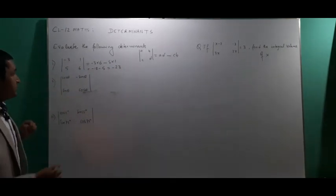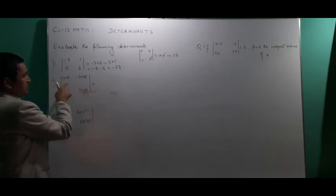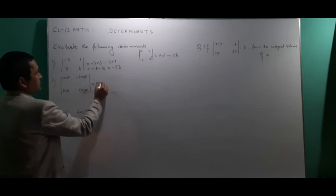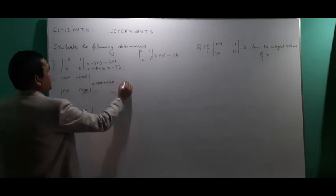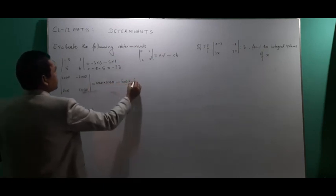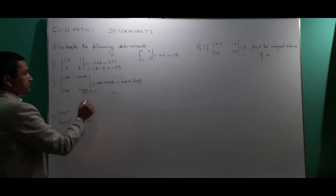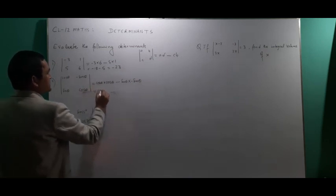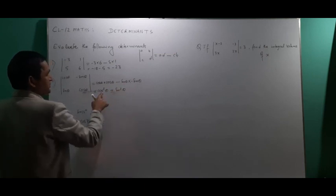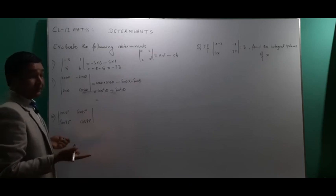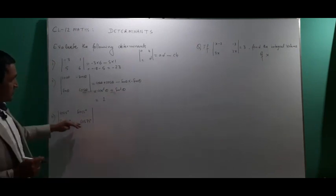We'll use the same formula to evaluate this trigonometric example. We have cos theta multiplied by cos theta, minus sin theta multiplied by minus sin theta. This equals cos squared theta plus sin squared theta, which by the trigonometric identity equals 1.